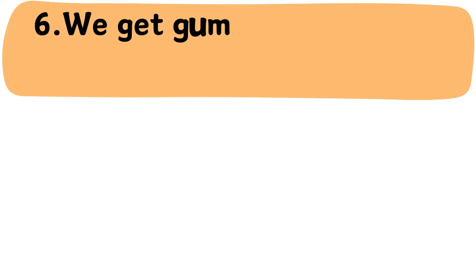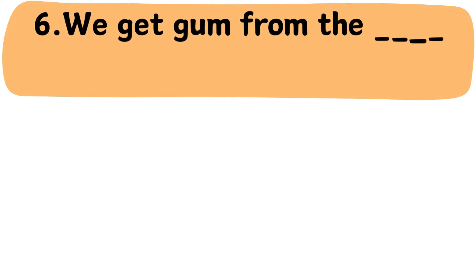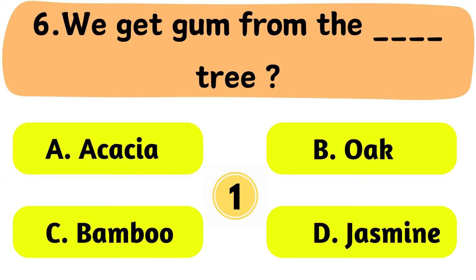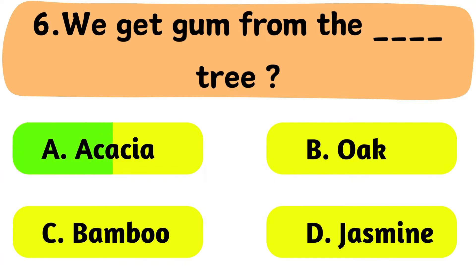Question No. 6: We get gum from which tree? A. Acacia. B. Oak. C. Bamboo. D. Jasmine. The correct answer is Option A: Acacia.